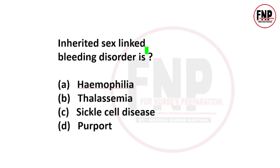Next question: What is the inherited sex-linked bleeding disorder? Options: hemophilia, thalassemia, sickle cell disease, purpura. The right answer is hemophilia. Hemophilia is an inherited sex-linked bleeding disorder.